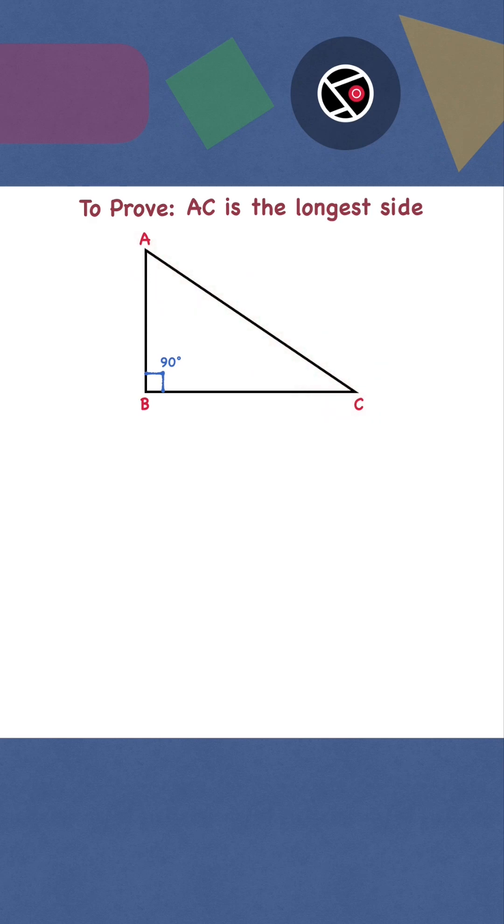Sum of interior angles of a triangle is 180 degrees. So angle B is 90 degrees. Angle A plus angle C is 90 degrees.